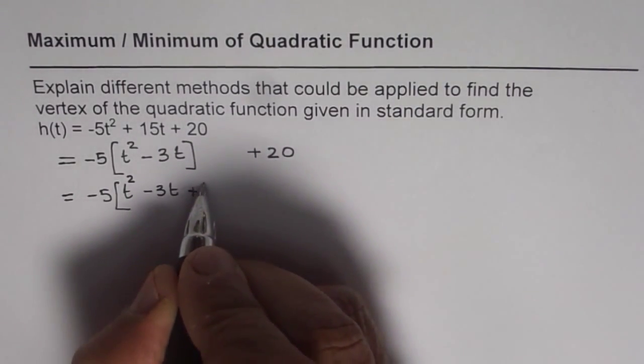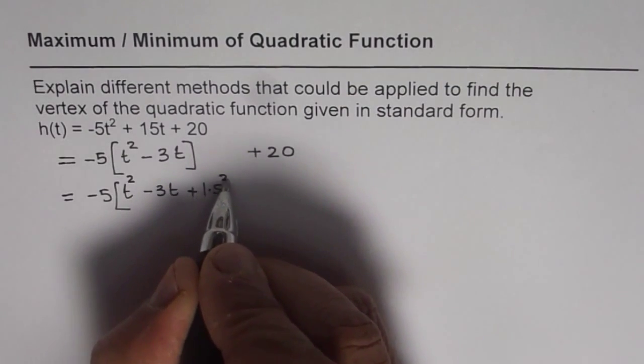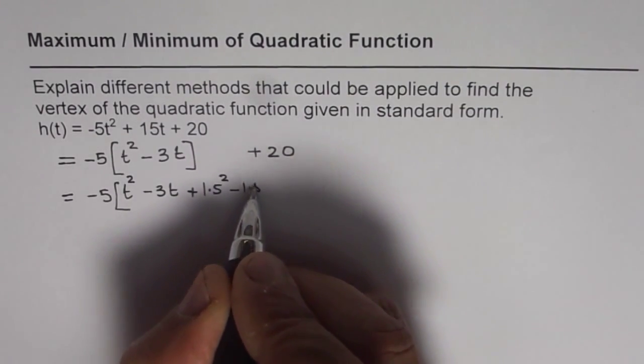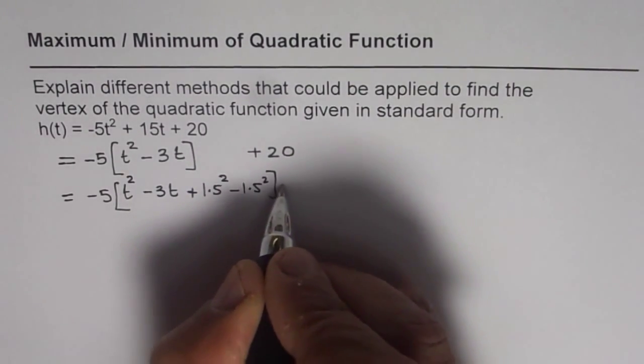So half of 3 is 1.5. So I can add and subtract 1.5. That is how we can complete a square.